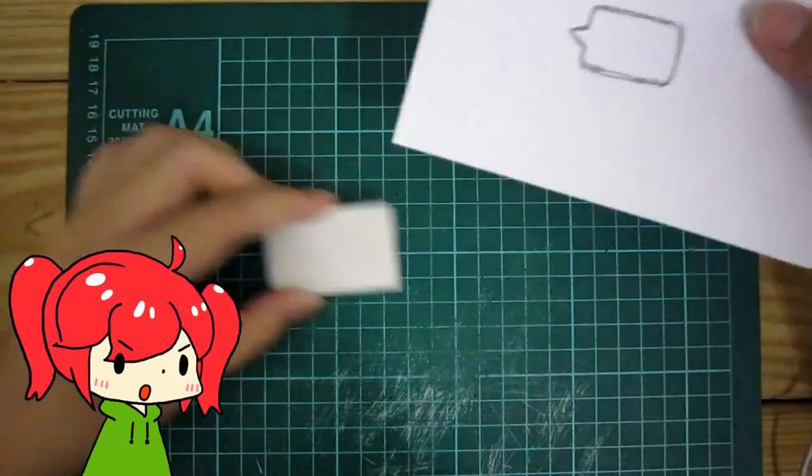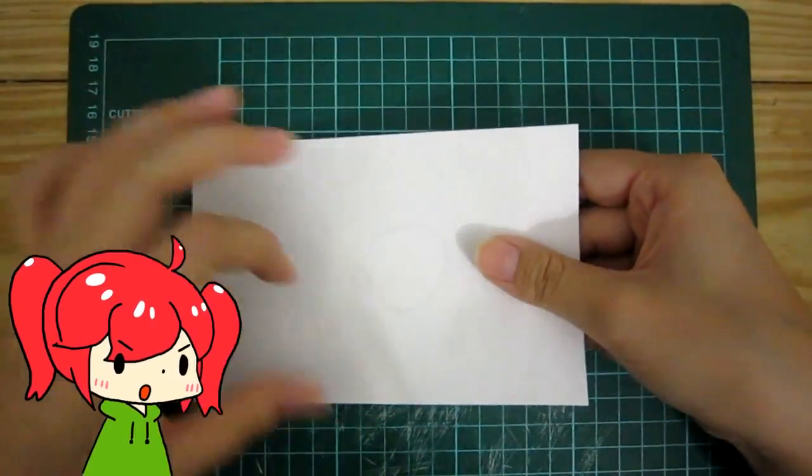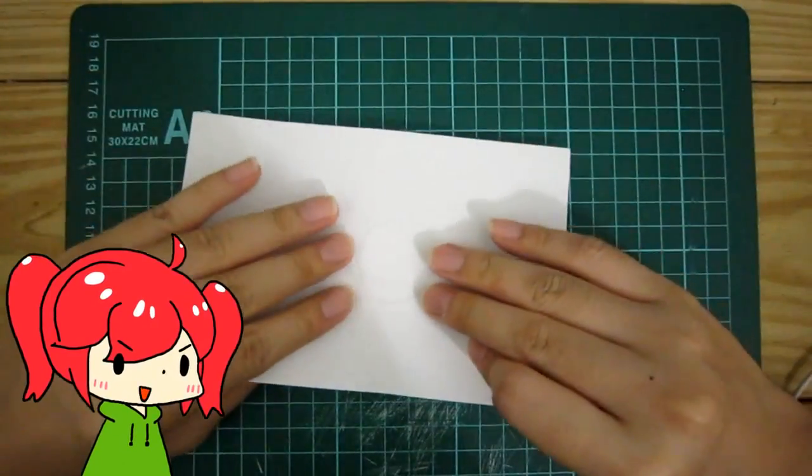Step two: Do the stone rubbing. Put the front side of the paper where your drawing is on the rubber and rub it.